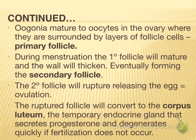Ovulation is the time when an egg has matured and is moving through the oviduct to the uterus for potential fertilization. At this point, the ruptured follicle converts into the corpus luteum, which acts as a temporary endocrine gland and secretes progesterone. If the egg becomes fertilized, the corpus luteum will continue to produce progesterone throughout the pregnancy. If not, it will degenerate quickly and the cells will be digested.